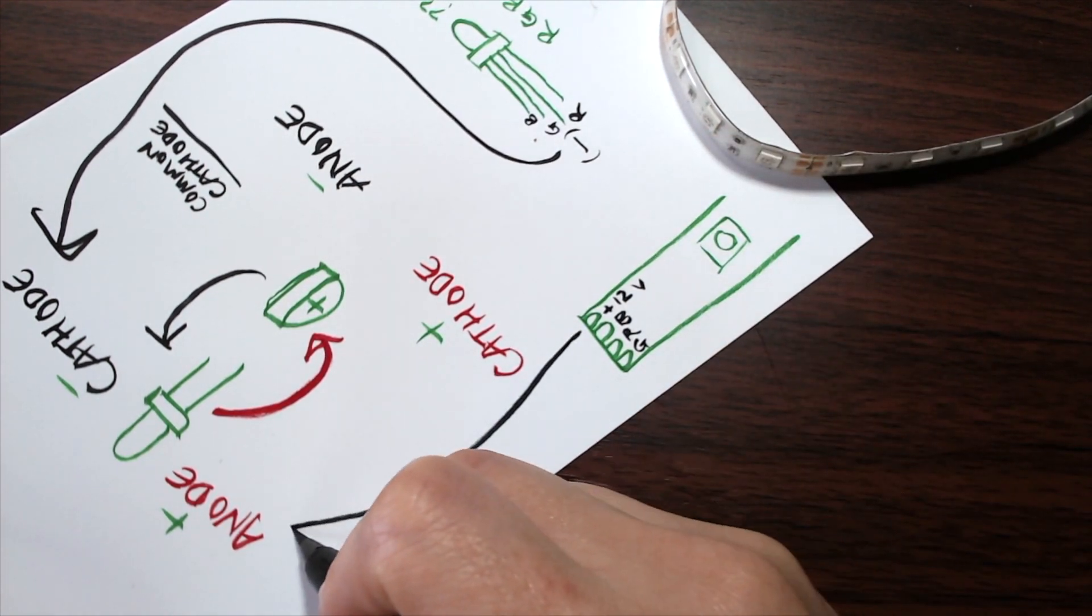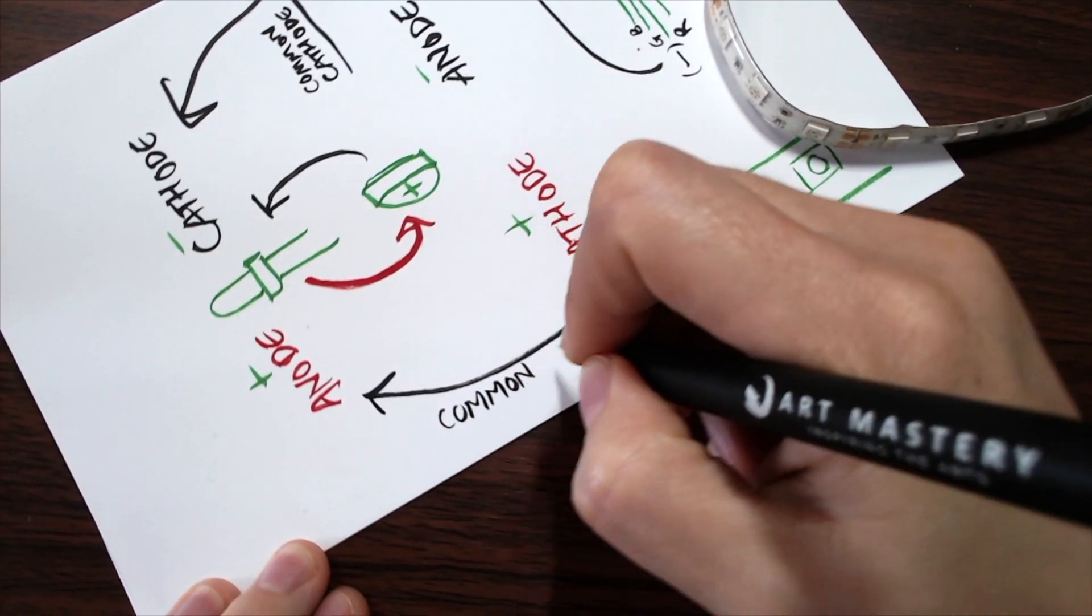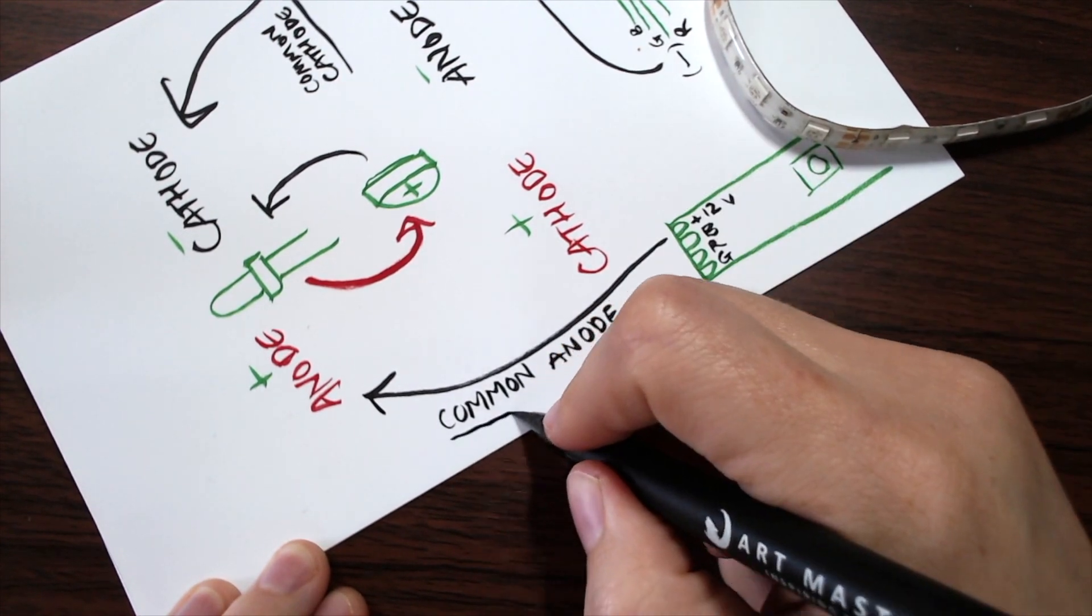As a final note, if you're building a real circuit with an LED and a battery, you'll probably want to put in a resistor. This prevents too much current from flowing through the circuit and burning out the LED.